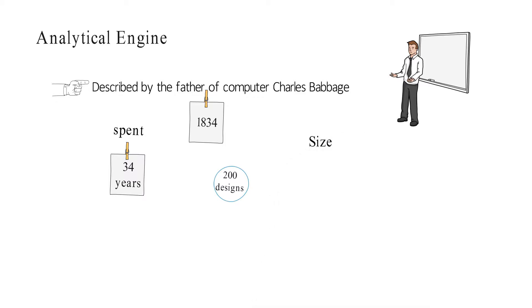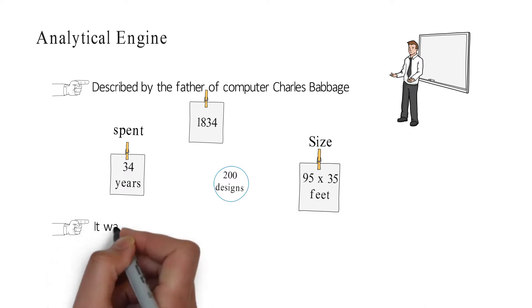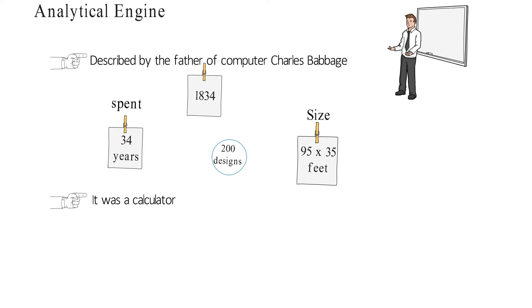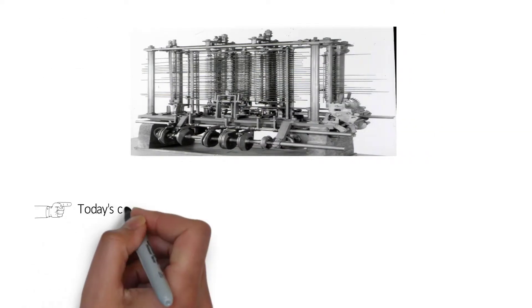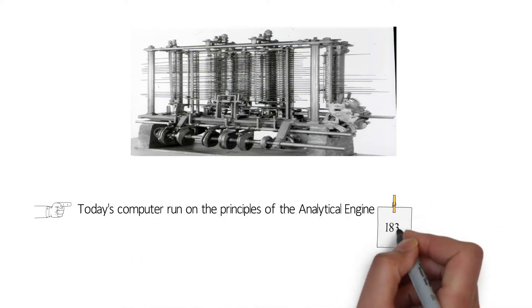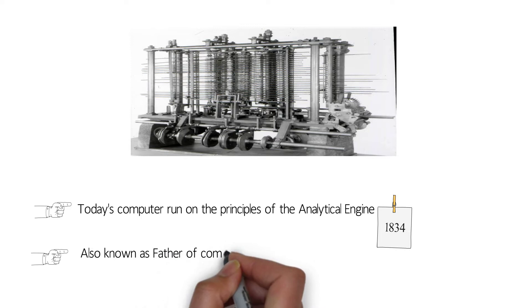Its size was around 95 by 35 feet. Analytical engine was the calculator designed for polynomial functions. Today's computers run on the principle of the analytical engine which was designed by Charles Babbage in 1834. That's why he is known as father of computer.